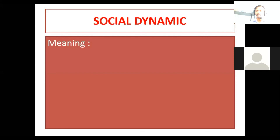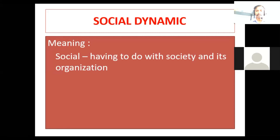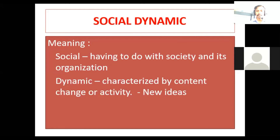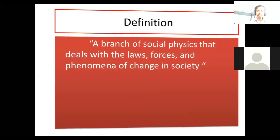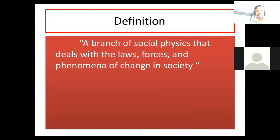Here, this is a separate unit we will learn in the next units. We are going to think about dynamics in community — what are the changes in community? Social means having to do with society and its organization. Dynamic is characterized by constant change or activity, positive changes. The definition is a branch of social physics that deals with laws, forces, and phenomena of change in society.